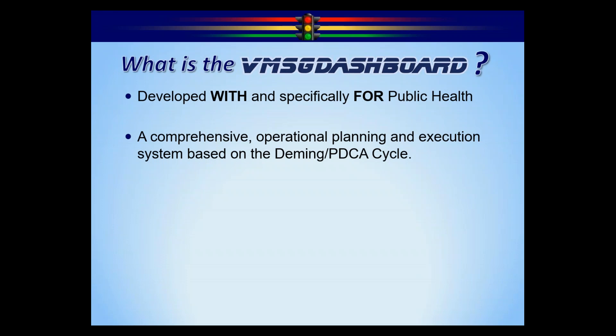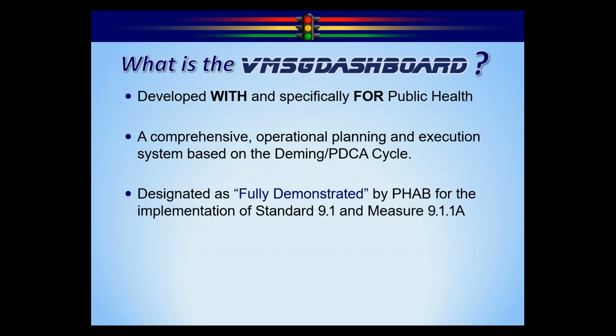With that said, the system has that plan, do, check and adjust cycle structured into it. Come around 2011 when FAB came along, this department had a fully demonstrated performance management system. Since then we have 240 health departments using our system, including yourself, for different phases of accreditation and some that are using it just as operational planning and documentation storage.